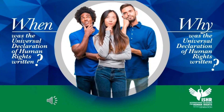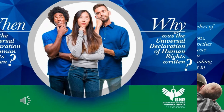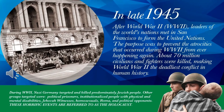When and why was the Universal Declaration of Human Rights written? In late 1945, after World War Two, the leaders of the world's nations met in San Francisco to form the United Nations. The purpose was to prevent the atrocities that occurred during World War Two from ever happening again. Some 70 million civilians and combatants were killed, making World War Two the deadliest conflict in human history.